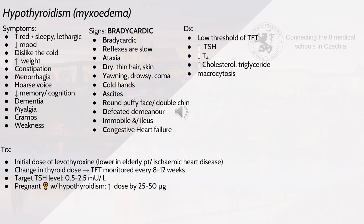Treatment for hypothyroidism is levothyroxine at an initial lower dose in elderly patients or those with ischaemic heart disease. TFTs should be monitored every 8-12 weeks with a target TSH of 0.5-2.5. In pregnant females with hypothyroidism, increase the dose by 25-50 micrograms. Adverse effects of thyroxine therapy include hypothyroidism if over-treated, reduced bone mineral density, worsening of angina and atrial fibrillation. Interactions include iron and calcium carbonate, which should be given at least four hours apart from levothyroxine.